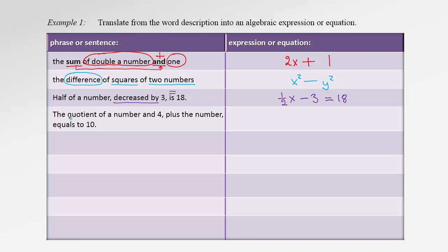'The quotient of a number and 4, plus the number equals 10.' The comma after 4 tells us to perform the division first: x divided by 4. Then we add the number — the word 'the' indicates it's the same number x. So the equation is x/4 + x = 10.